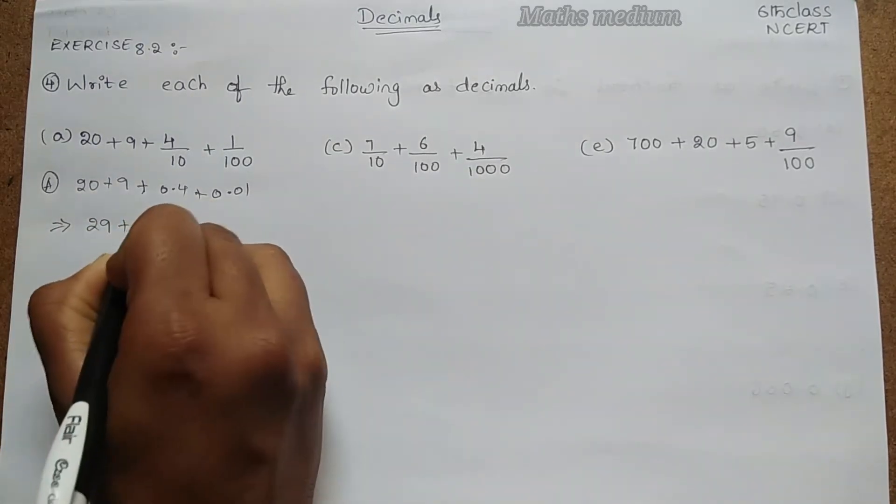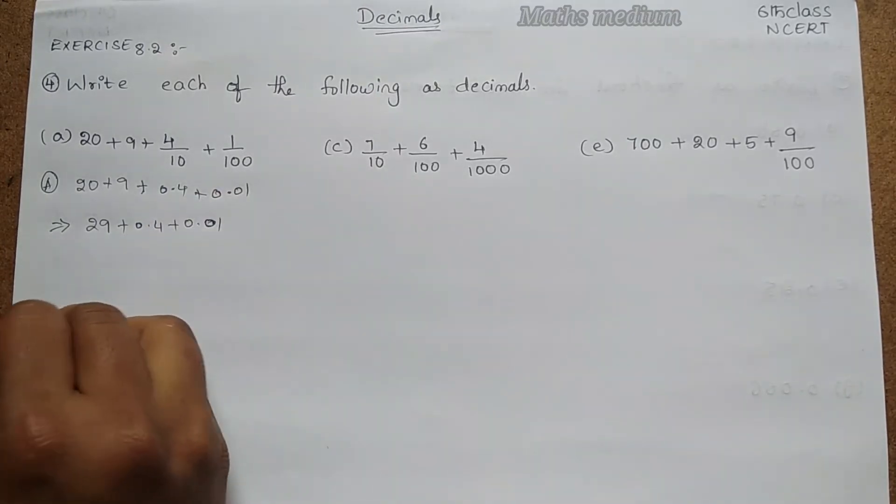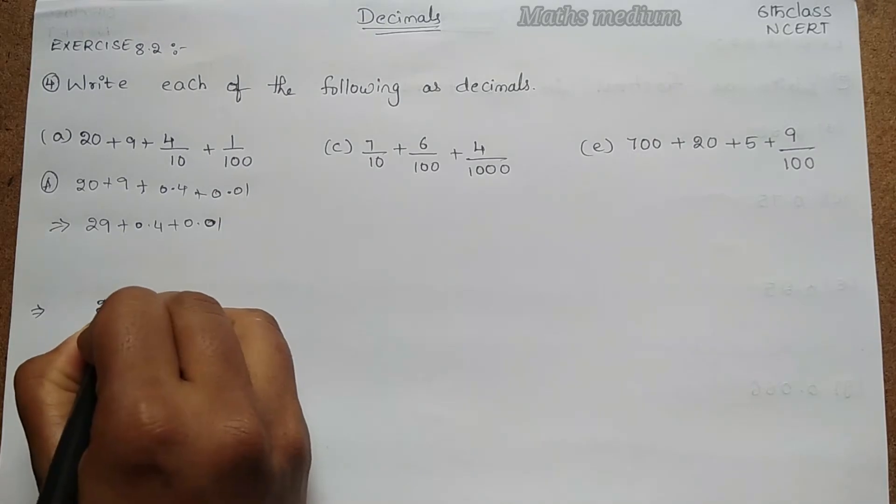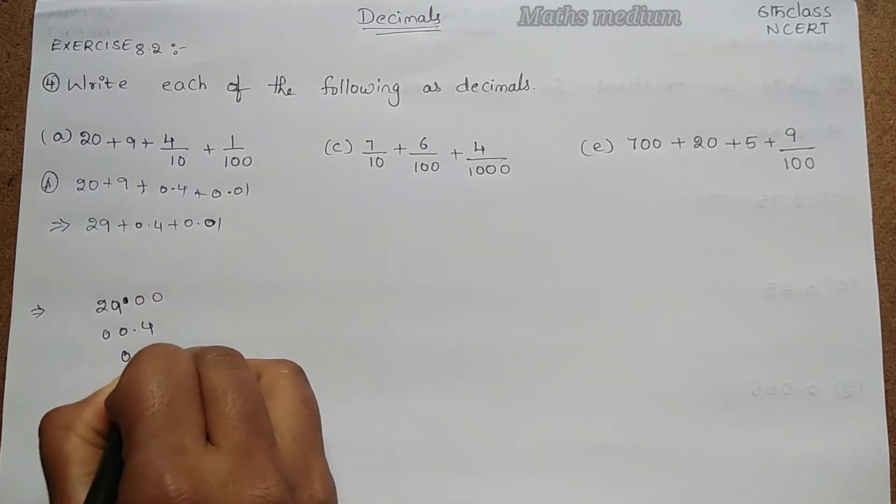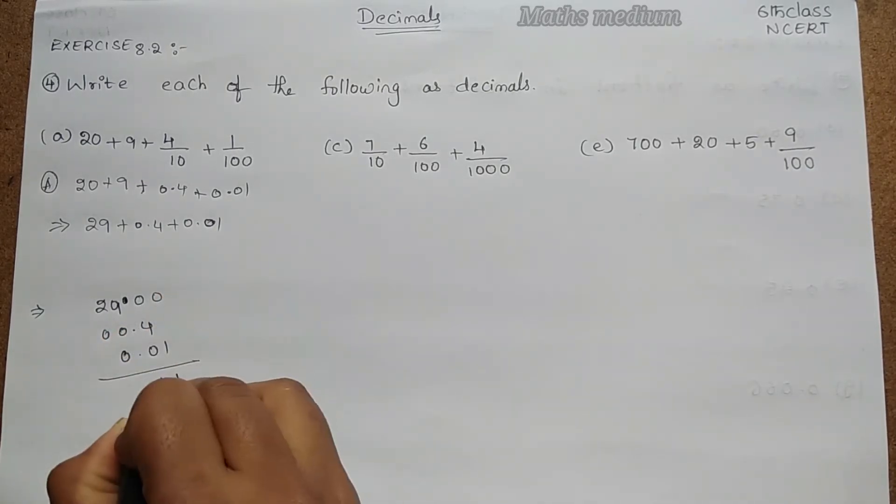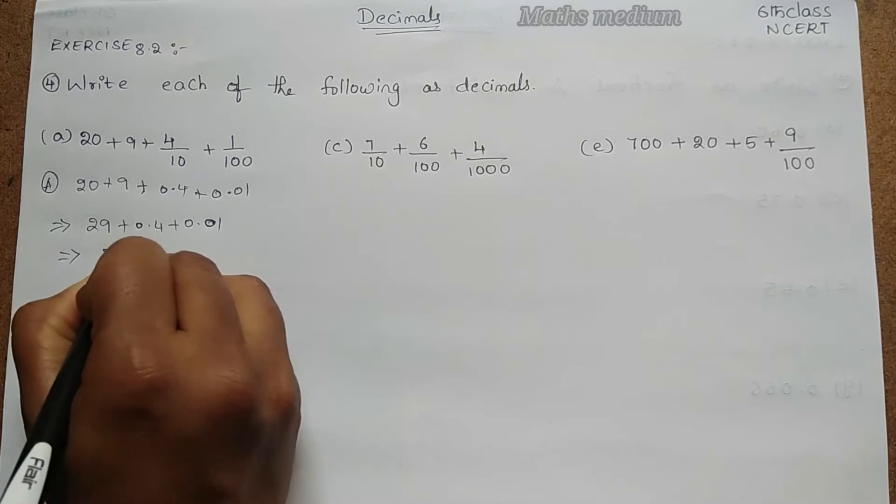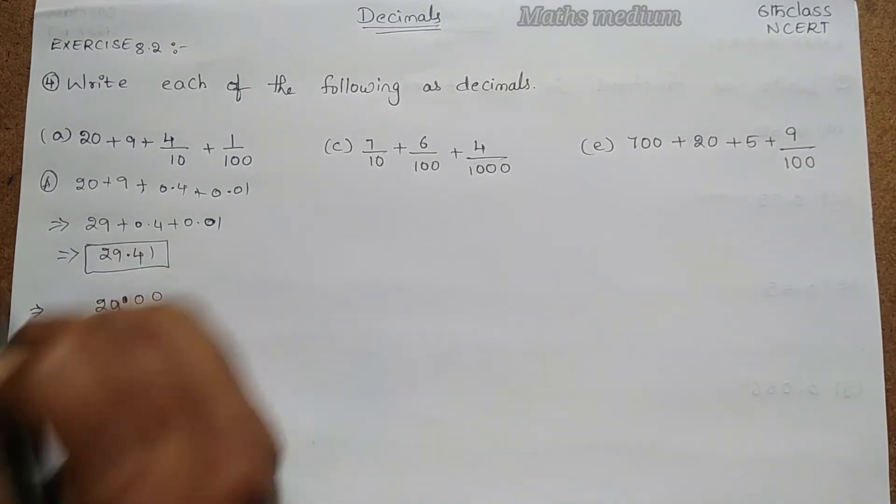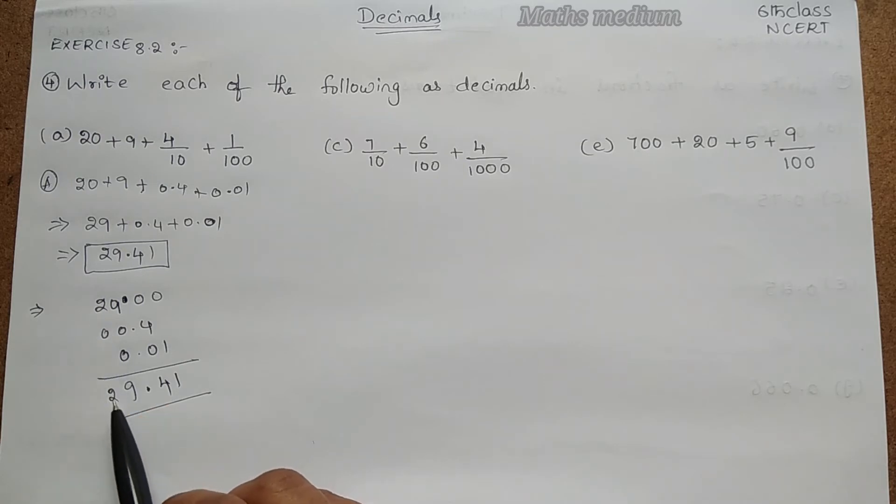Now simplify this: 20 + 9 = 29, plus 0.4, plus 0.01. Now if you take this as 29.00 and this as 0.40, this is as 0.01. Now in the 100th place we get 1, in the 10th place we get 4, and point, this is 9, this is 2. So it is 29.41 as the answer for this question. Here we get 100th place as 1 and 10th place as 4 and 1's place as 9, 10's place as 2. So the answer is 29.41.